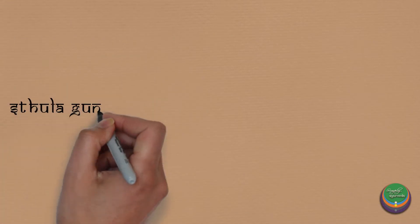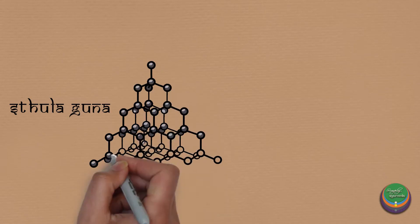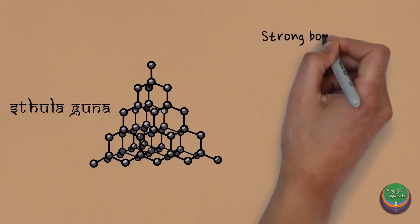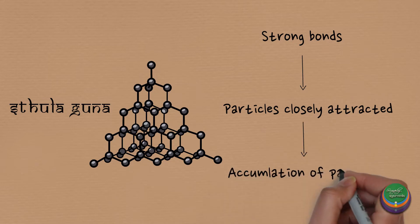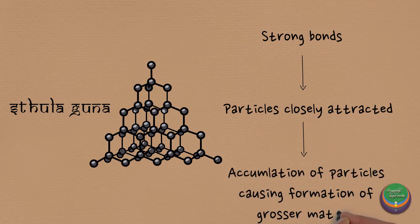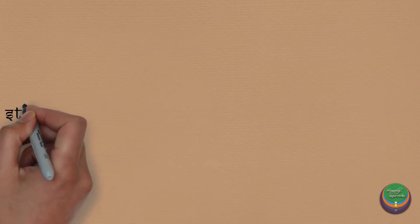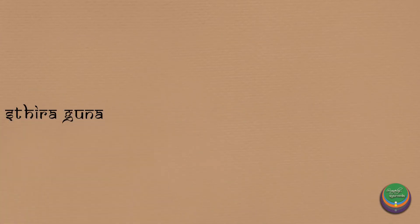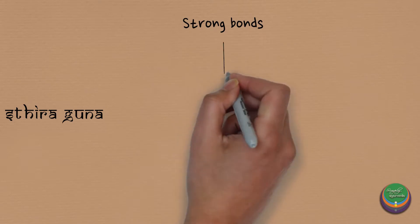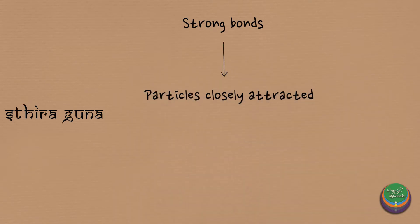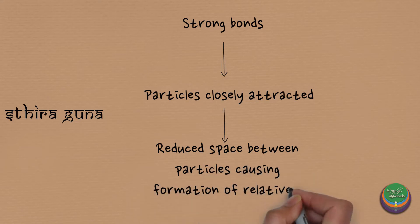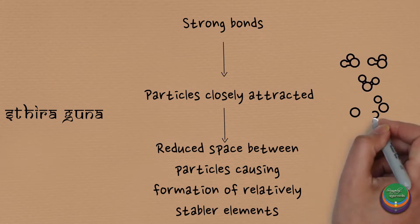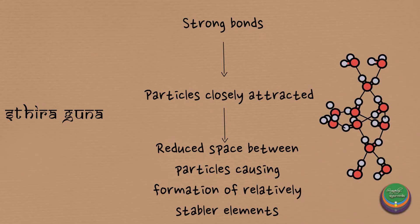Thula Guna or grossness is caused due to the close approximation of particles as bonds become stronger, leading to the creation of visible matter. Thira Guna is similar — due to the close proximity of particles by virtue of their strong bonds, the space between particles is reduced, holding the material in a relatively stable state. This Thiratva attained is what complements Gurutva.